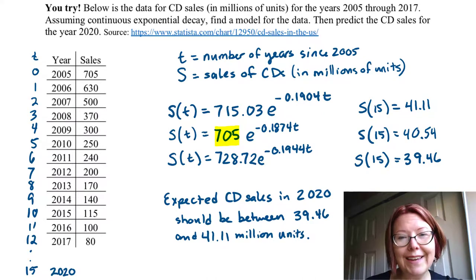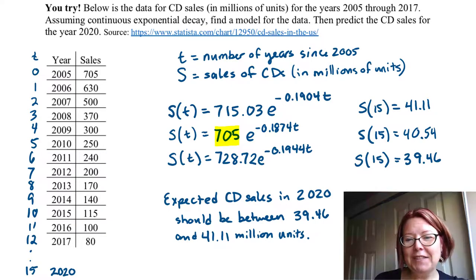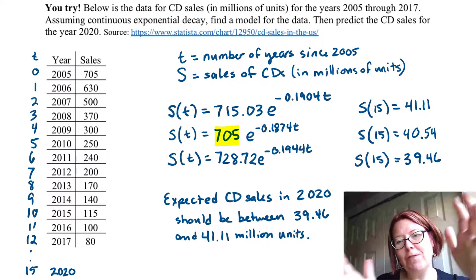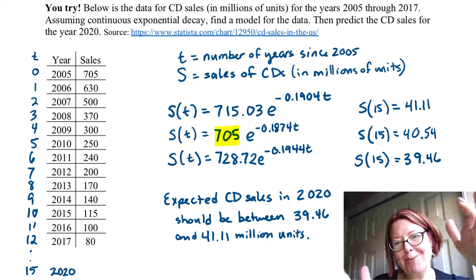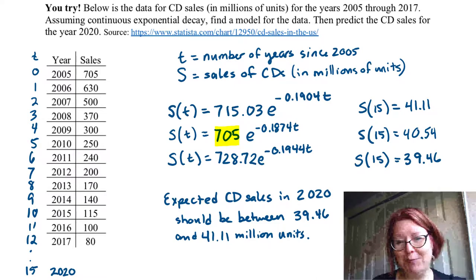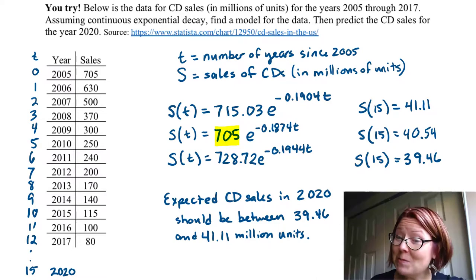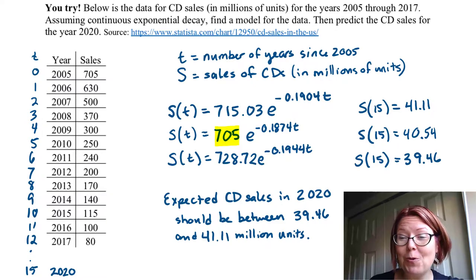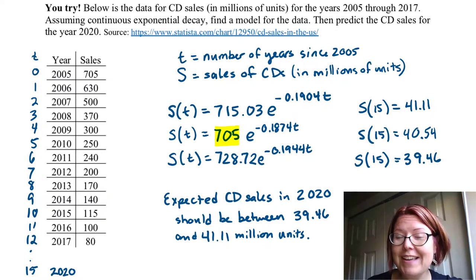When we're doing exponential regression, it's really best to give yourself a few models to look at to make an accurate prediction. And it's also best if the other people who are going to be using your predictions know that there is some variability there.